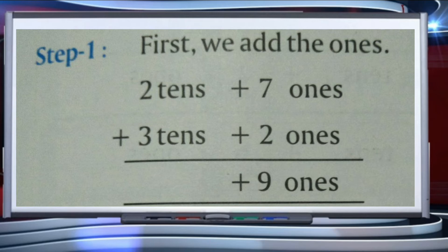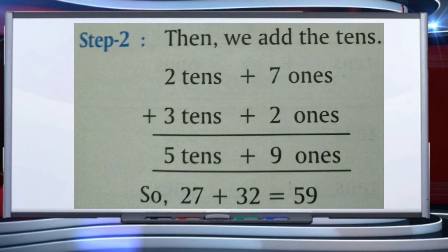Step two: we have to add the tens. We add the numbers on the tens place — two tens and three tens, that means two plus three equals five, giving us five tens. So the number becomes five tens plus nine ones. Therefore 27 plus 32 equals fifty-nine.